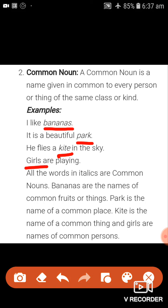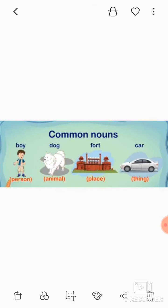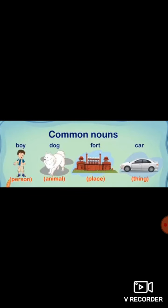Bananas are the name of common fruits or things; park is the name of a common place; kite is the name of a common thing; and girls are names of common persons. Let me show you a picture — these are all simple names of common nouns. A noun is the name of a person, animal, place, or thing. Boy, dog, food, car — these are all examples of common nouns. Clear?